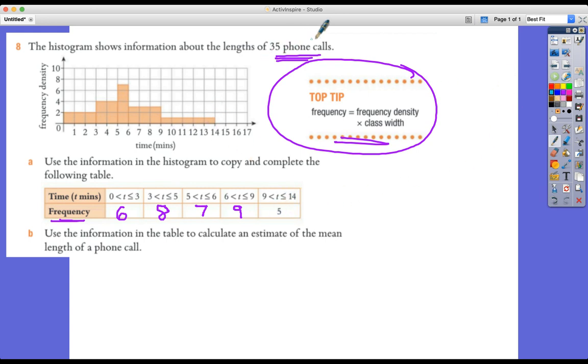And we could double check our answer because we know that in this survey or whatever it is, there's 35 phone calls. So all of these should add up to 35. So 6 plus 8 is 14, 14 and 7 is 21, add 9 is 30. Yes, they add up to 35.